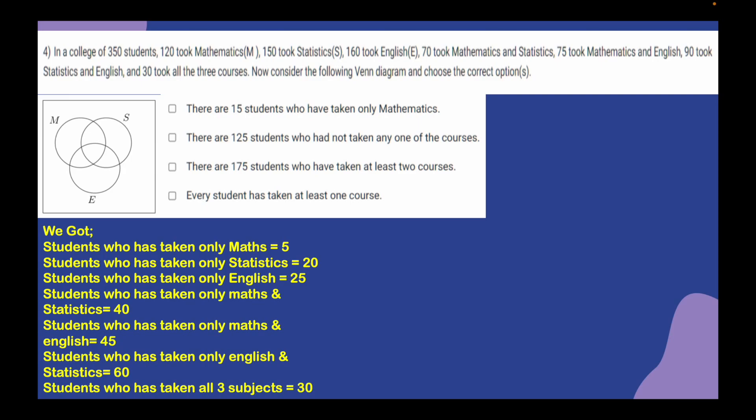Checking the first option — there are 15 students who took only Mathematics — this is completely wrong, because we derived that only 5 students took only Mathematics. So option 1 is incorrect.